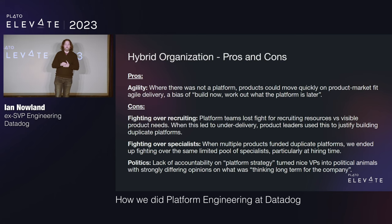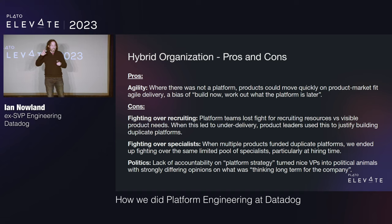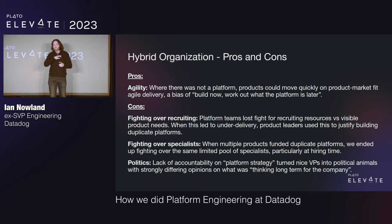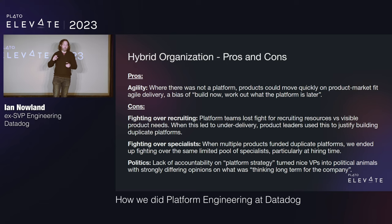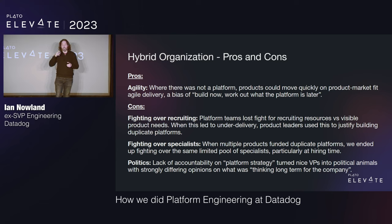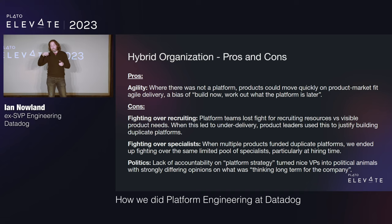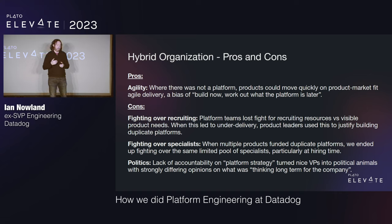That org definitely had strengths as well as problems. The big strength — particularly for the APM and logs products that were smaller — was that when they wanted to build something platform-like that didn't exist yet, they just didn't have to talk about it. They were told from above that going after product market fit and beating competitors was the most important thing. So for agility, particularly in a competitive phase trying to beat incumbents, it was very high because you cut out all conversation about how to cooperate and just let duplication happen.